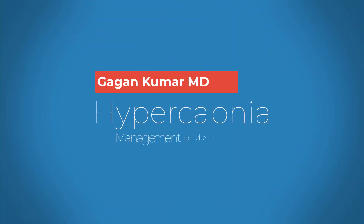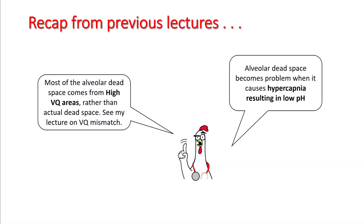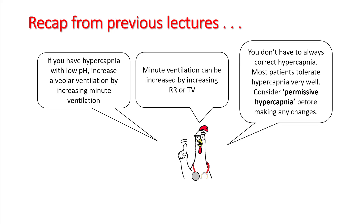Hello everyone, today we'll be talking about dead space ventilation and how to manage it. From the previous lecture, we understood that most alveolar dead space comes from high VQ areas rather than actual dead space. Alveolar dead space becomes a problem when it causes hypercapnia resulting in low pH, so if you're dealing with hypercapnia and a low pH, you have to increase alveolar ventilation by increasing the minute ventilation.